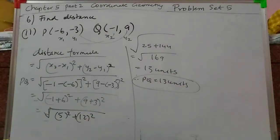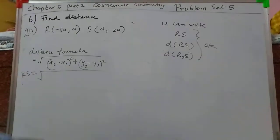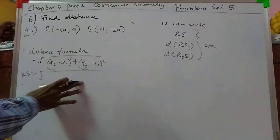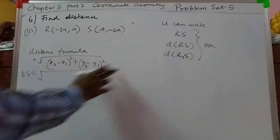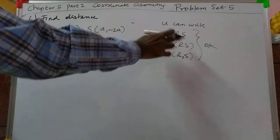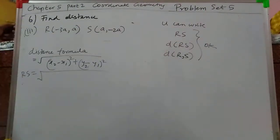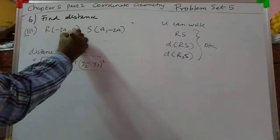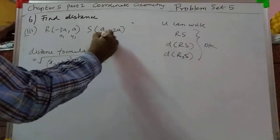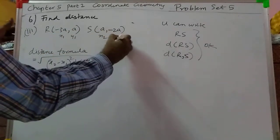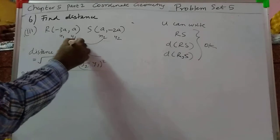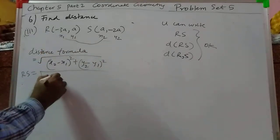Now the third sub-problem of Problem 6. Distance formula — you can write it like this or like this, no problem. Take the first point as (x1, y1) and the second as (x2, y2). Using the formula, we subtract the coordinates.